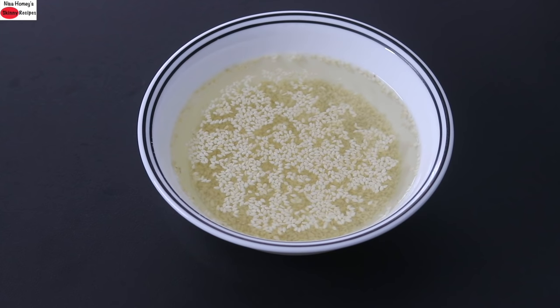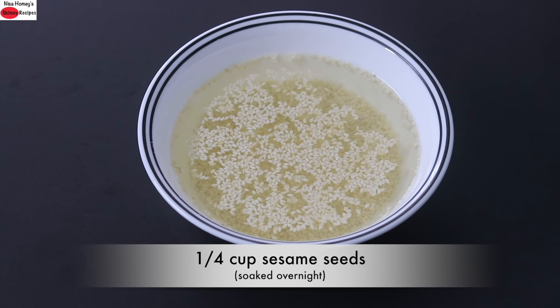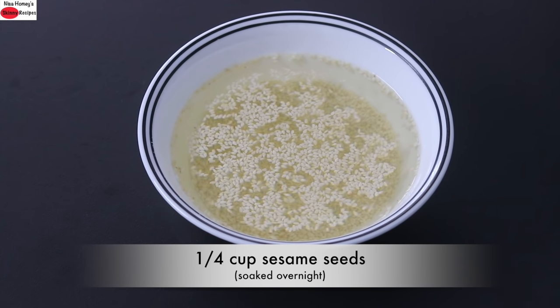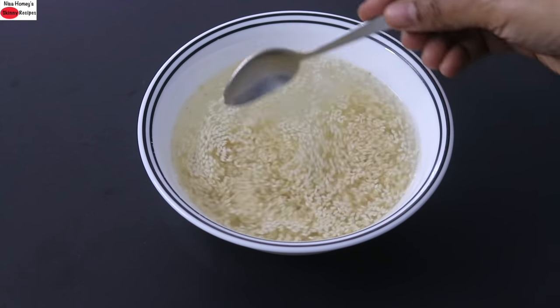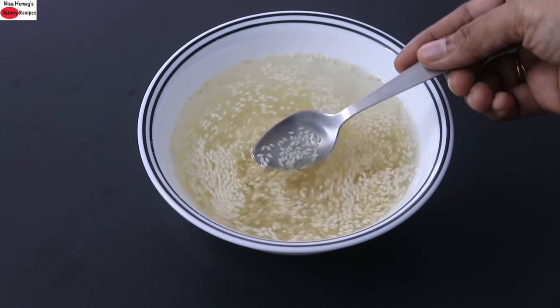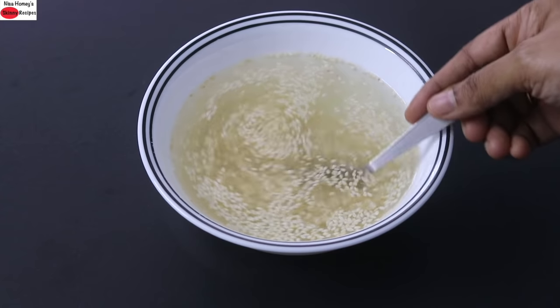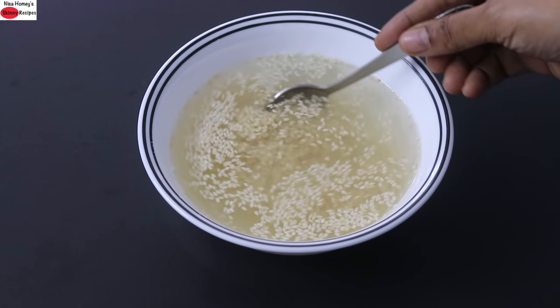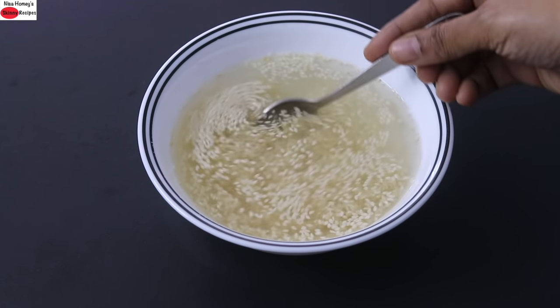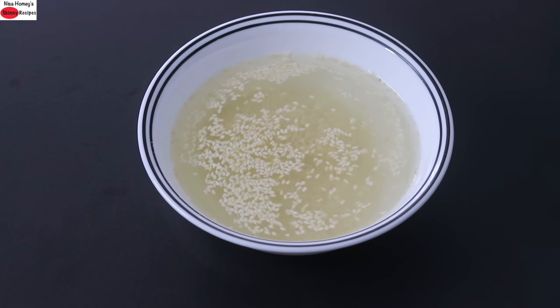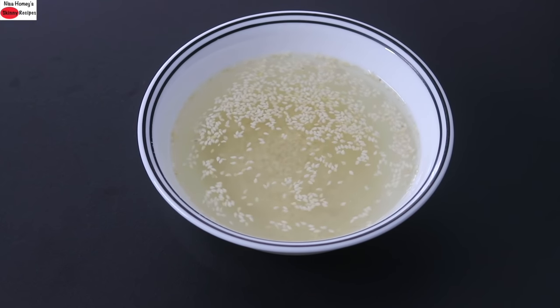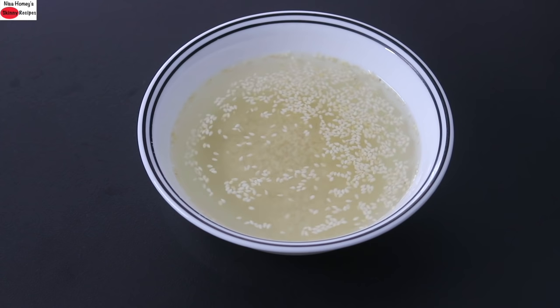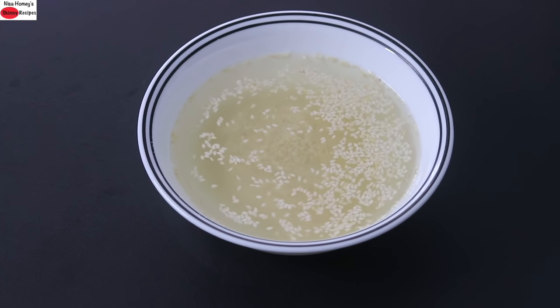I have already soaked one-fourth cup or about 35 grams of sesame seeds overnight. Ideally, sesame seeds should be soaked for at least 6 hours. Overnight soaking would be more beneficial to help release the phytic acid content in the seeds. Phytates are nutrient inhibitors which may prevent nutrient absorption, so it's always ideal to soak seeds before using them.